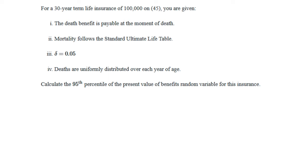We're given a 30-year term life insurance of $100,000 on age 45. The death benefit is payable at the moment of death. We can use a standard ultimate life table. Force of interest is 5%. We have UDD. We want to calculate the 95th percentile of the present value of benefits random variable for this insurance.